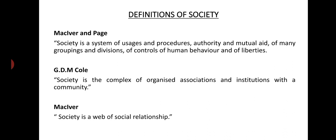Let us have a look at some of the definitions of society. As per MacIver and Page, society is a system of usages and procedures, authority and mutual aid of many groupings and divisions, of controls of human behavior and of liberties.